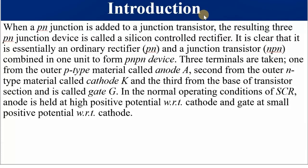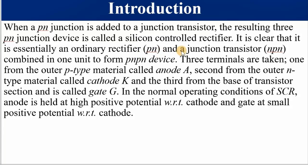When a PN junction is added to a junction transistor, we have a device with three junctions. A transistor has two junctions and a PN junction diode has one, so combining them gives a three-junction PNPN device called a Silicon Controlled Rectifier. It has three terminals: the anode taken from the P-type material, the cathode (symbol K) from the N-type material, and the gate (symbol G) from the base of the transistor.